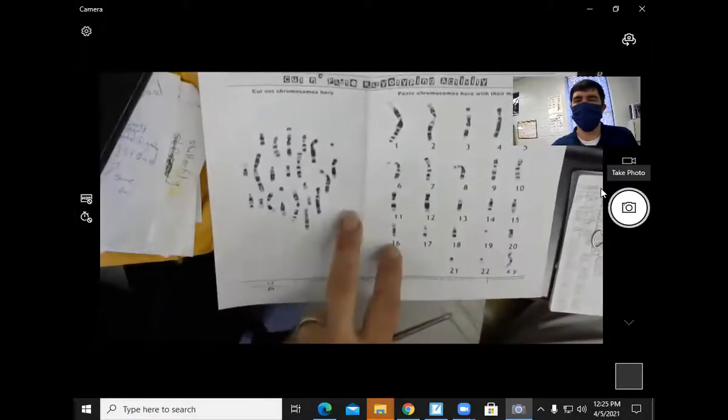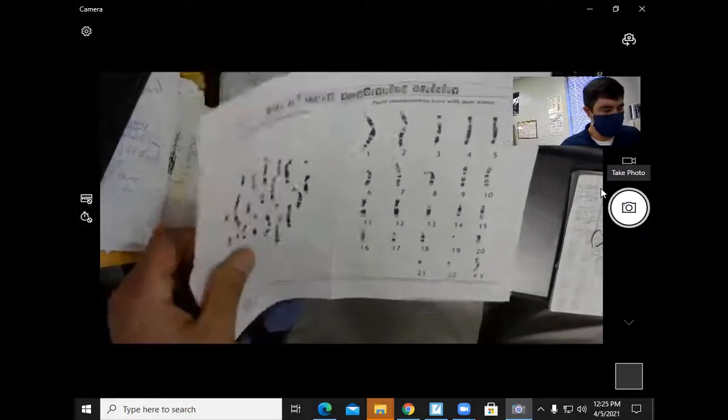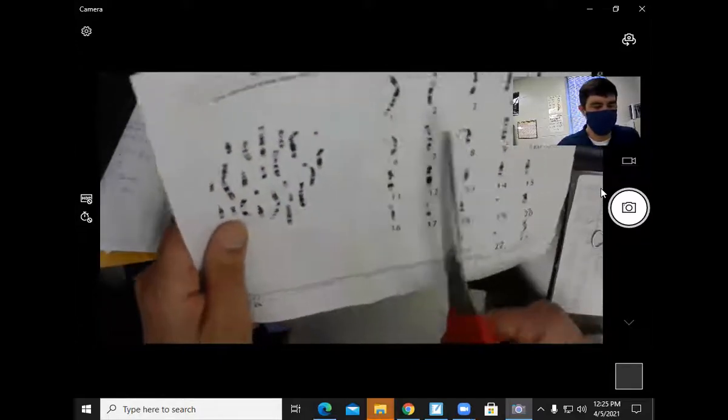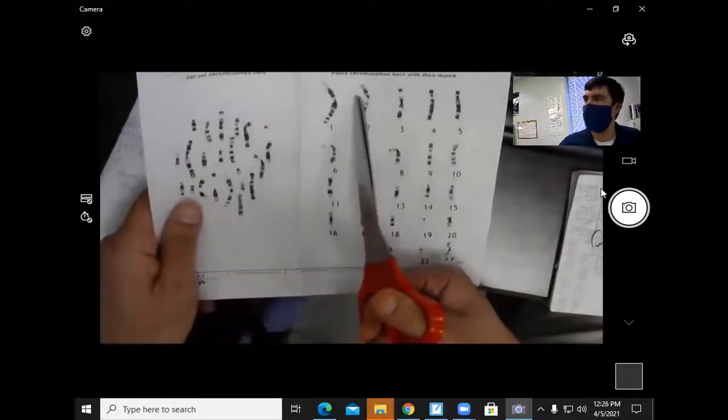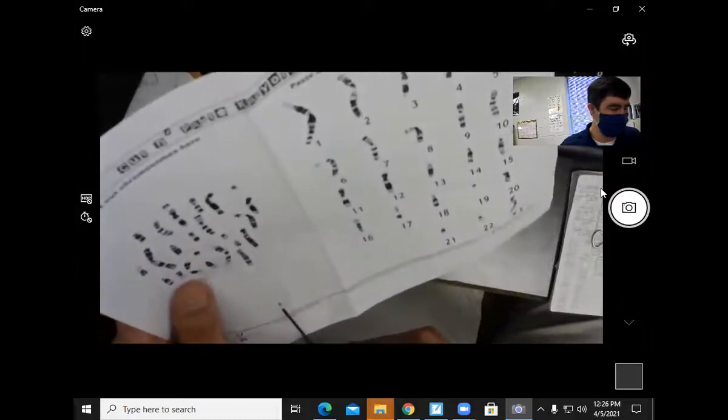All right. What you're going to do is you're making your karyotype. You're going to cut out each chromosome, and then you're going to match it up with the chromosome beside it.